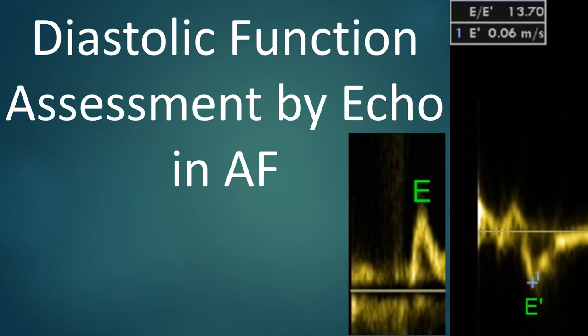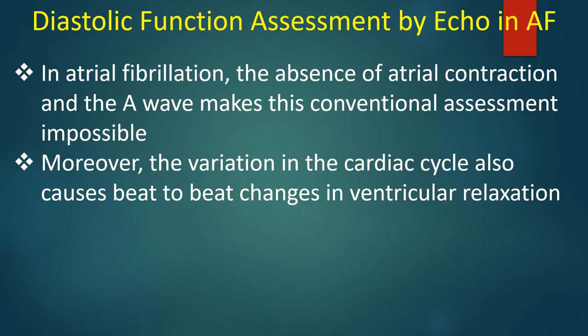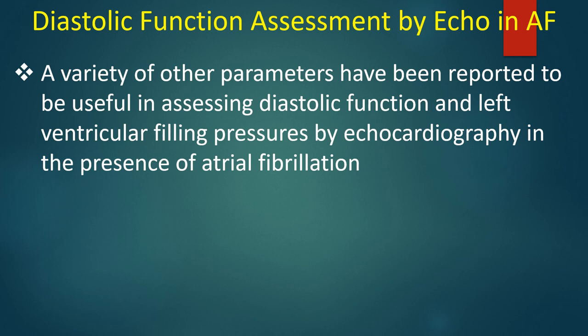Left ventricular diastolic function assessment by echocardiography conventionally relies on mitral inflow velocity measurement with demonstration of E/A reversal as evidence of diastolic dysfunction. In atrial fibrillation, the absence of atrial contraction and the A wave makes this conventional assessment impossible. Moreover, variation in cardiac cycle also causes beat-to-beat changes in ventricular relaxation.